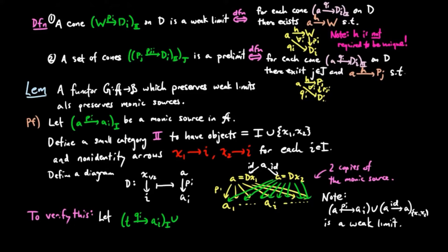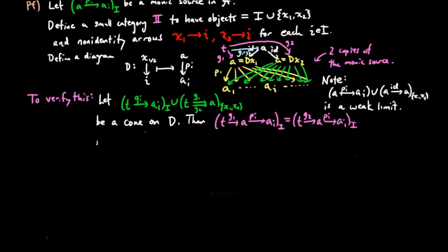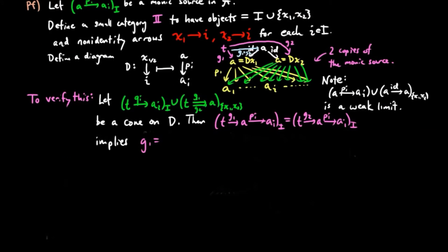To verify this, let QI union G1 and G2 be a cone on D as indicated in the diagram. Then if the two sources are equal, forgetting for the moment that PI is a monic source, we have G1 is equal to G2 if and only if A is a weak limit for D.